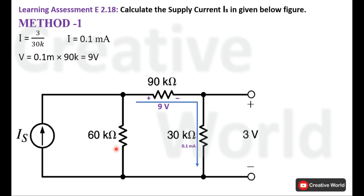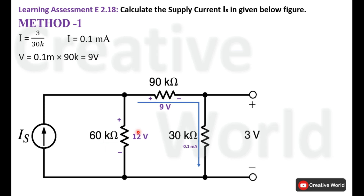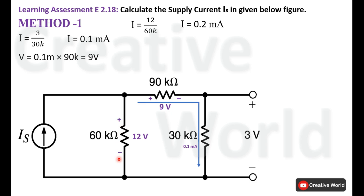This 60 kΩ resistance is in parallel with these two resistances. Whatever voltage appears across those two resistances, the same voltage will appear across the 60 kΩ resistance as well. So the voltage across the 60 kΩ resistance equals the sum of the two voltages, which is 12 volts. The current through this resistance will be 12 divided by 60 kΩ, giving 0.2 milliampere. The direction of this current is downward because the entering terminal has a positive sign and the leaving terminal has a negative sign.